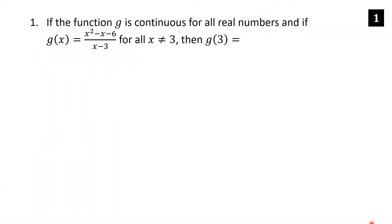If the function g is continuous for all real numbers and g(x) equals x² minus x minus 6 over x minus 3 for all x not equal to 3, then g(3) equals what? First, let's rewrite x² minus x minus 6 over x minus 3 in another form by factoring the numerator.